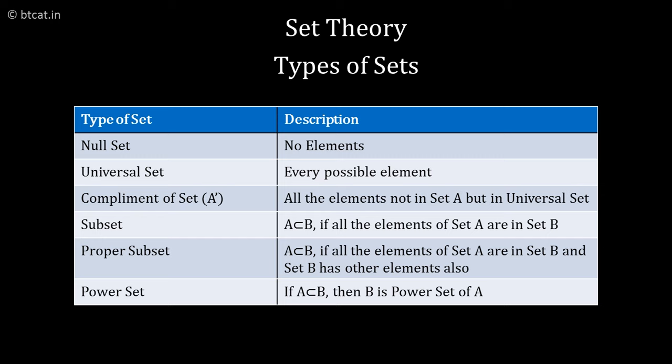What is complement of a set then? Complement of a set is A dash, which is all the elements which are not present in A. So where they are present? They are present in the universal set.